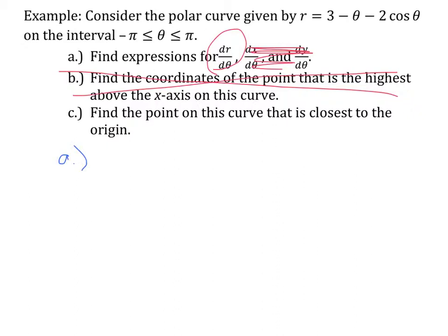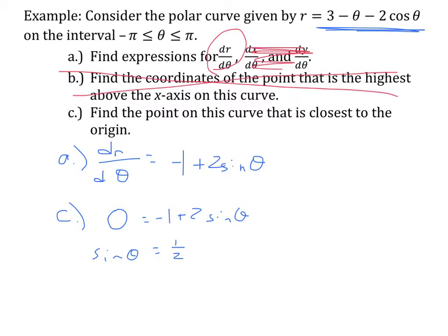For part a, finding dr/dθ is just taking the derivative of this r expression that was given. So dr/dθ will be -1 + 2sin(θ). Next, for part c, they want me to find the point that's closest to the origin. For the point that's closest to the origin, I need that to equal 0. So 0 = -1 + 2sin(θ). If I solve, I'll get sin(θ) = 1/2, and that means θ will be the inverse sine of 1/2.